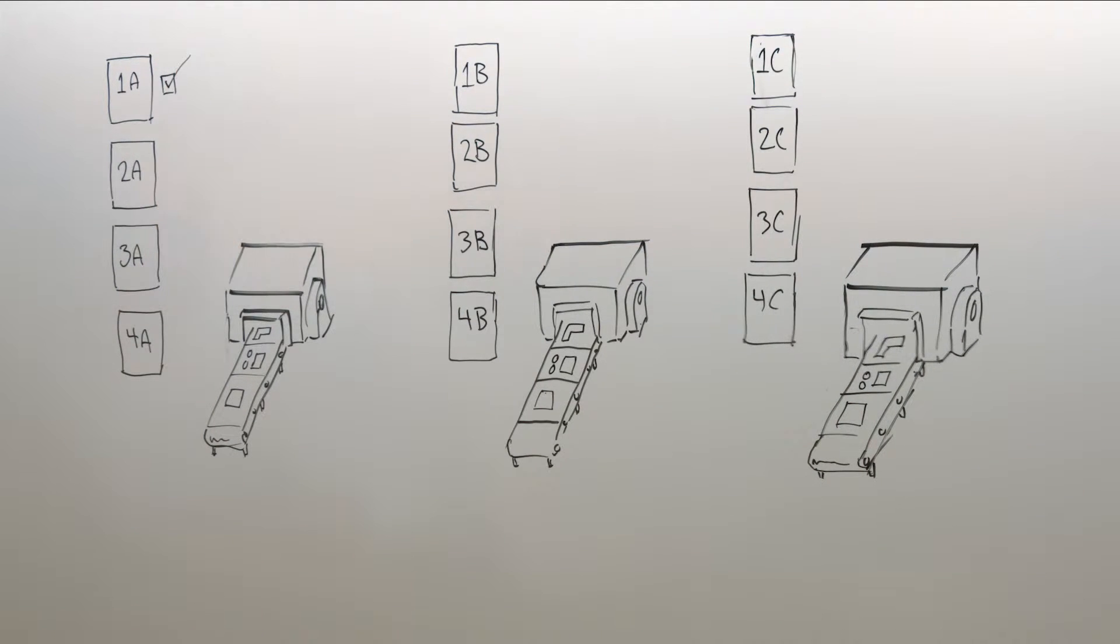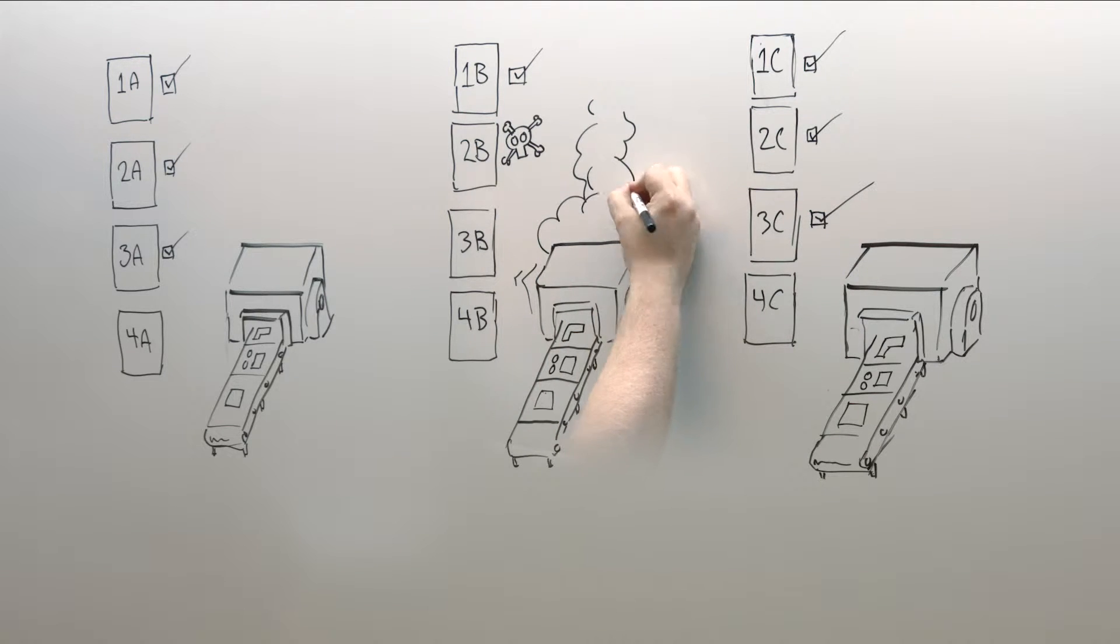Each machine is churning along through your nesting plans when machine 2 goes down. Your other machines keep making their nests as planned, but you need the parts on machine 2 right now.